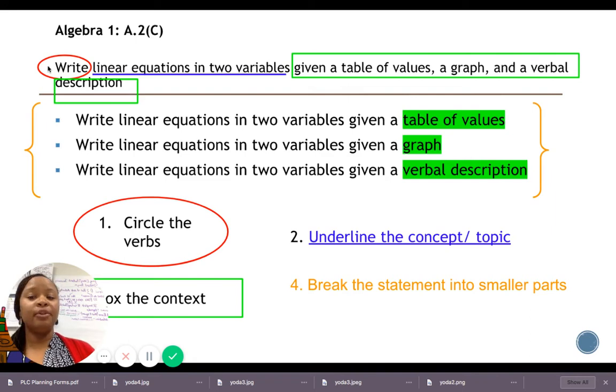So there's only one verb. The only thing that the students are expected to do, they're going to be tested, is by writing. They have to write something. What are they writing? Linear equations of two variables. How do these linear equations of two variables need to appear? In a table form. How else? As a graph. How else? In a verbal description.